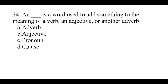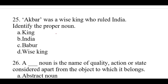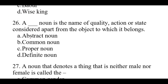Question number 24: An adverb is a word used to add something to the meaning of a verb, an adjective or another verb. Question number 25: Akbar was a wise king who ruled India. Identify the proper noun. The right option is B: India. Question number 26: An abstract noun is the name of a quality, action or state considered apart from the object to which it belongs. The right option is A: Abstract noun.